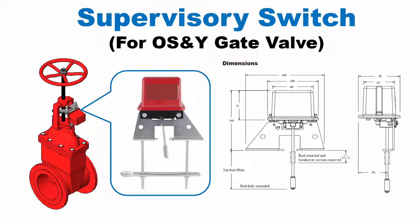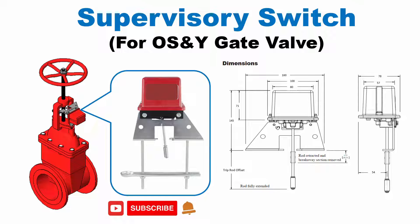In this video, I will create two parts of the family: main family and bolt nut, and then load and combine them into the main family. I will refer to the dimensions in the picture to create the parameters. Before going to Revit, I would like to request that you subscribe to the channel and click the notification bell for the next video.